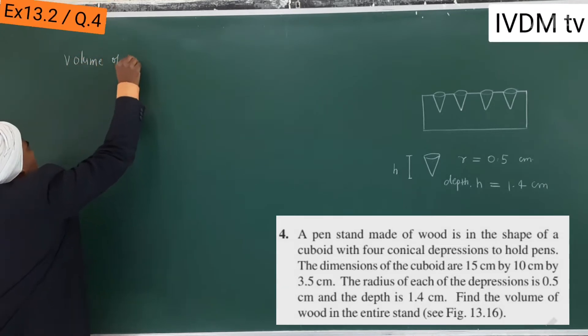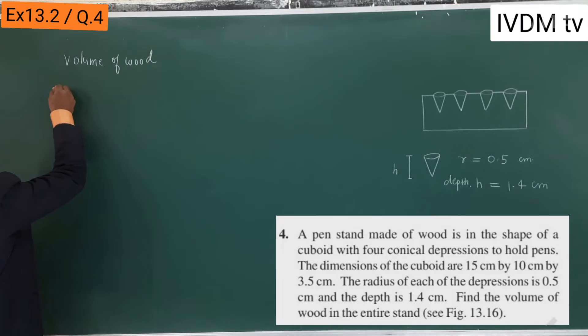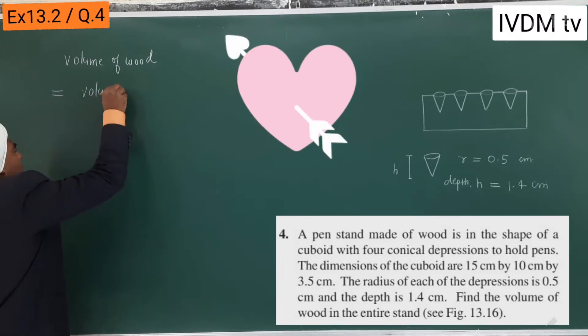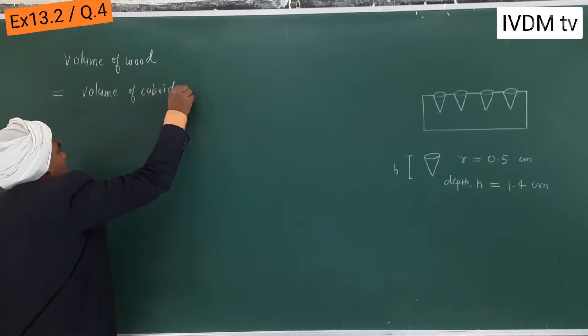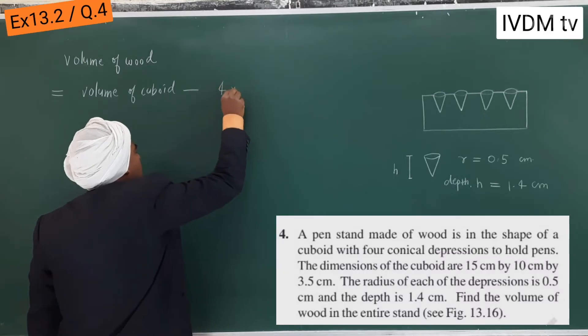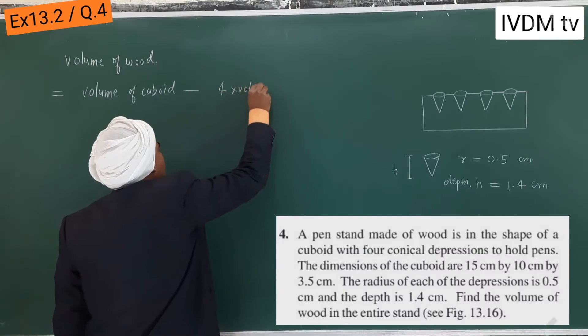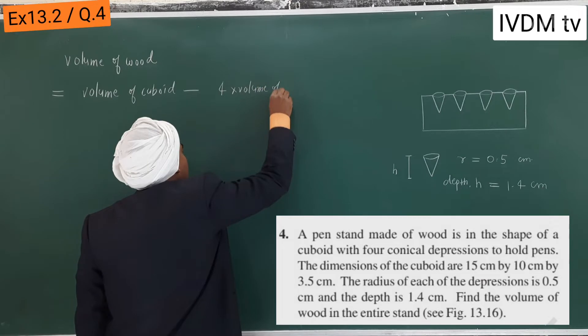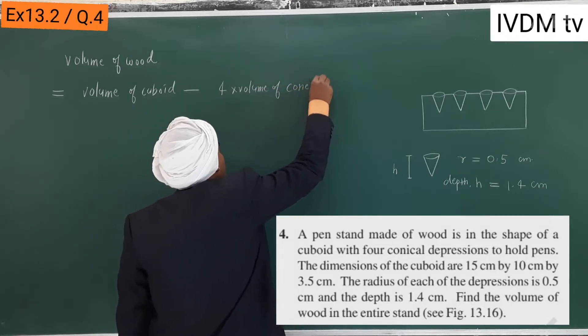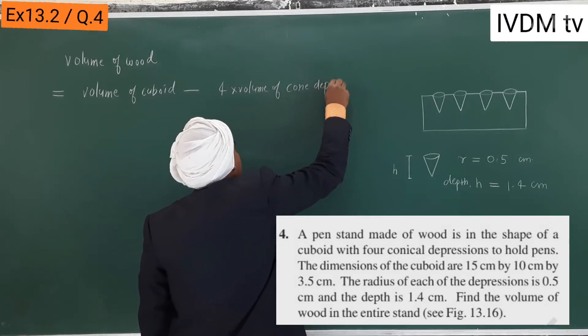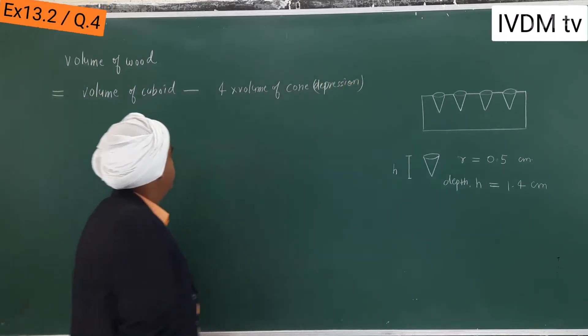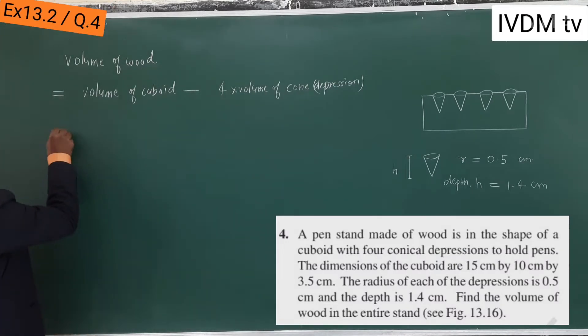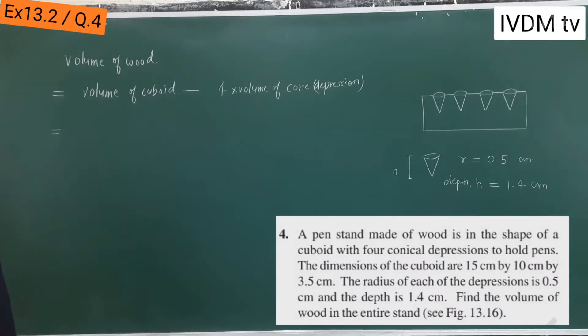Volume of wood is equal to volume of cuboid minus 4 into volume of cone. Cone depression is cut, so volume of cone. It is everything in centimeter.